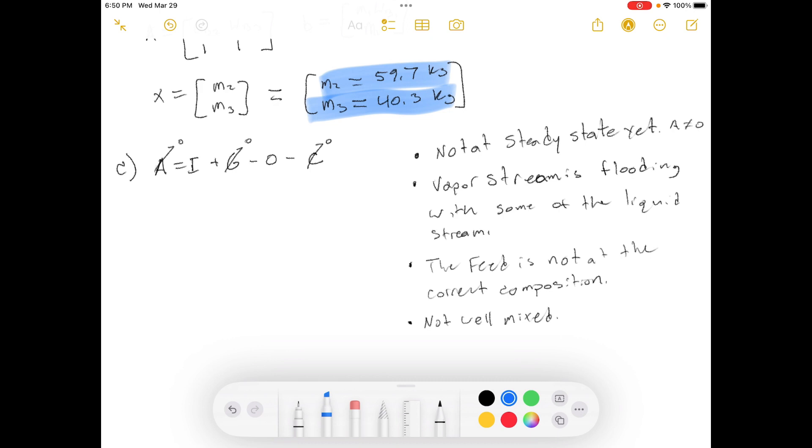Part C. Returning to the continuous process, suppose the evaporator is built and started up and the product stream flow rates and compositions are measured. The measured percentage of benzene in the vapor stream is 85%, and the product stream flow rates have the values calculated in Part A. But the liquid product stream is found to contain 7% benzene instead of 10.6%. One possible explanation is that a mistake was made in the measurement. Give at least five others. Think about the assumptions you made in obtaining the solution of Part A.